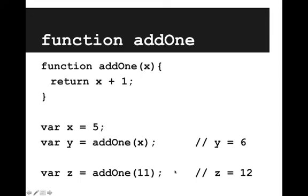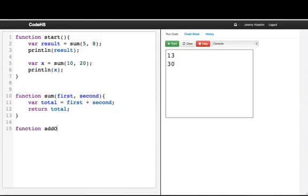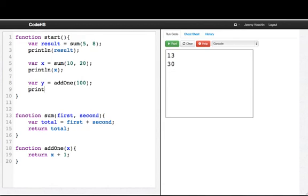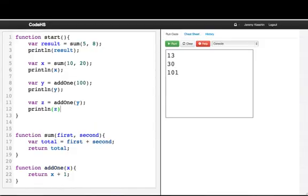So let's go into the code editor and write the add1 function. So function add1, x, and we'll just return x plus 1. Now if we call var y equals add1 of 100, when we print line y, we get 101. If we try again, var z equals add1 of y, when we print line z, we get 102.